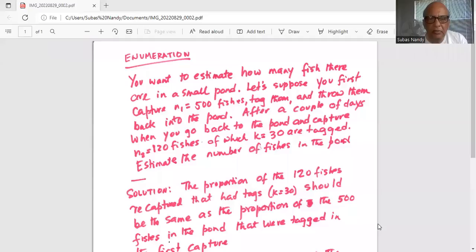You want to estimate how many fish there are in a small pond. Let's suppose you first capture N1 equal to 500 fishes, tag them and throw them back into the pond. After a couple of days, when you go back to the pond and capture N2 equal to 120 fishes, of which k equal to 30 are tagged. Estimate the number of fishes in the pond.